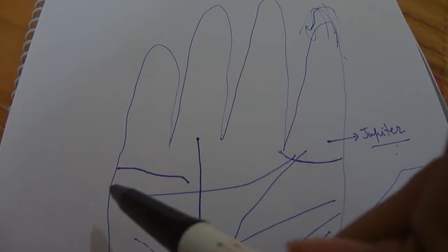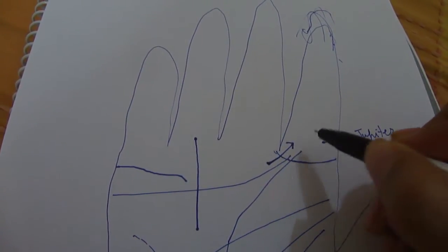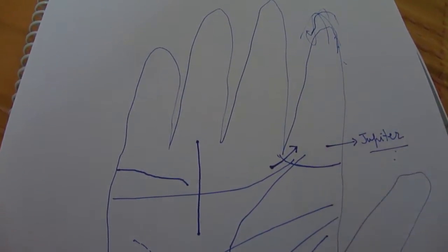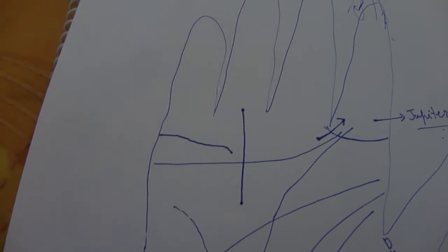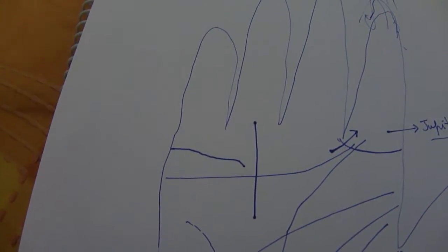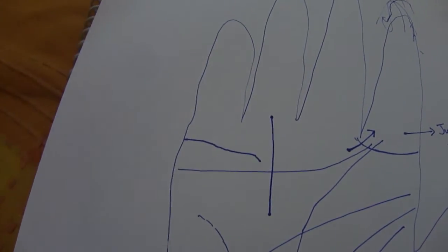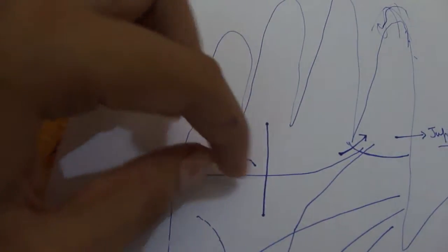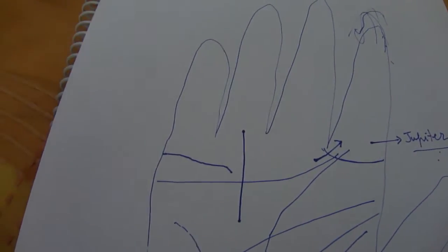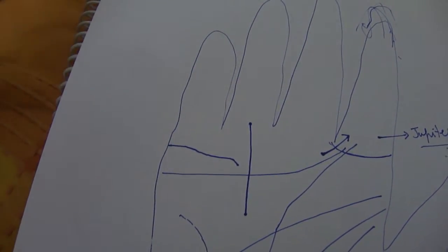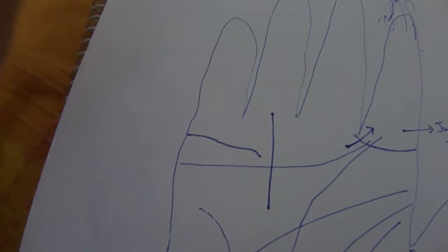The heart line gets sucked into the mount of Jupiter and kind of goes in. This again indicates towards the person who wants a partner who's very idealistic, who's very social, kind of a person who's famous, for whom status is important. The person who possesses such heart line always looks for a partner who is popular or maybe status driven. The person himself or herself would be a bit status driven.